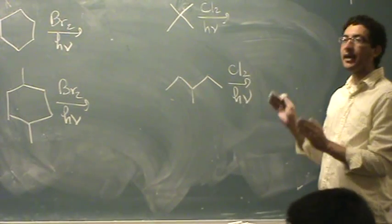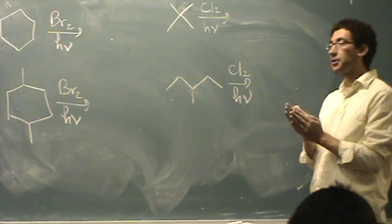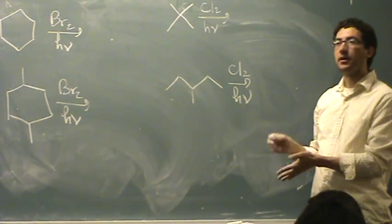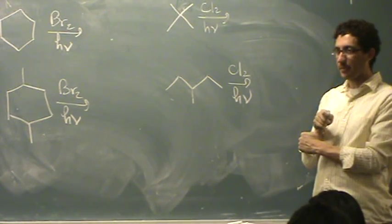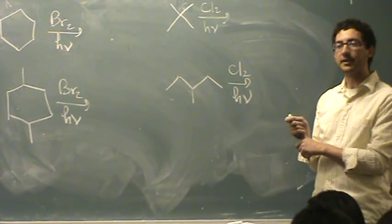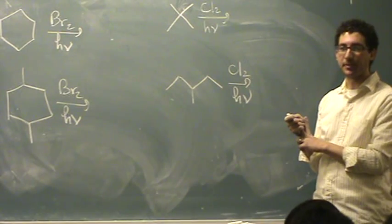So once you see that, you know it's free radical halogenation, you're going to put the bromine or chlorine, whatever it is, onto the molecule. First, you're looking for the tertiary spot. You can find one and put it there. If not, put it on the secondary spot. If you can't find that, put it on the primary spot.